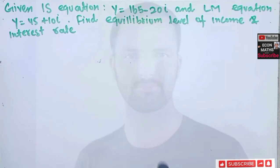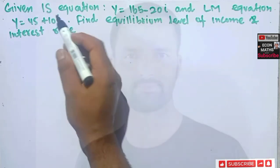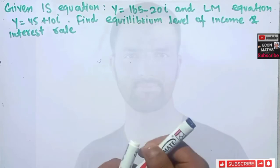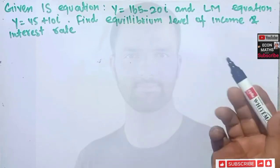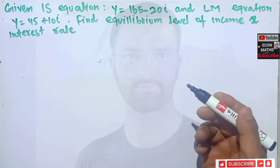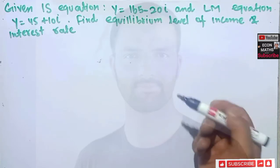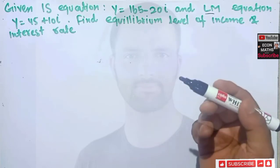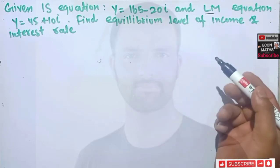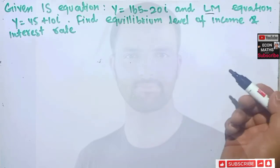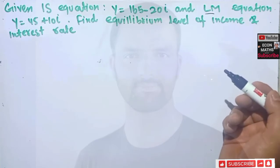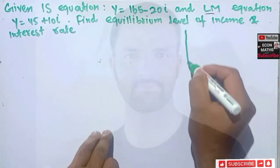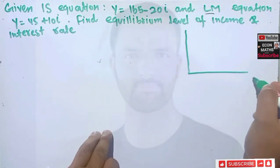The IS equation shows us the combination of rate of interest and level of income for which our goods market is in equilibrium. Similarly, the LM equation shows us the different combinations of interest rate and the level of income for which our money market is in equilibrium. Let us show this graphically.